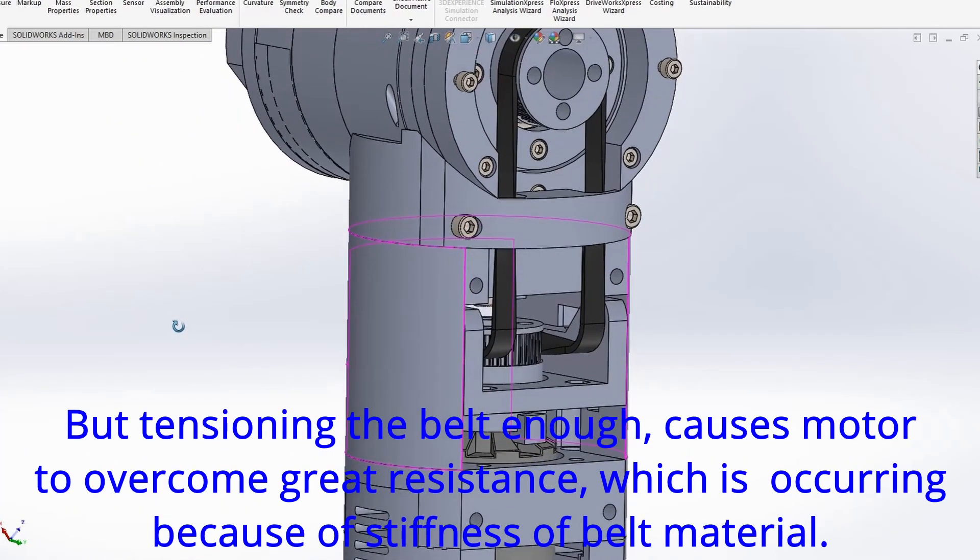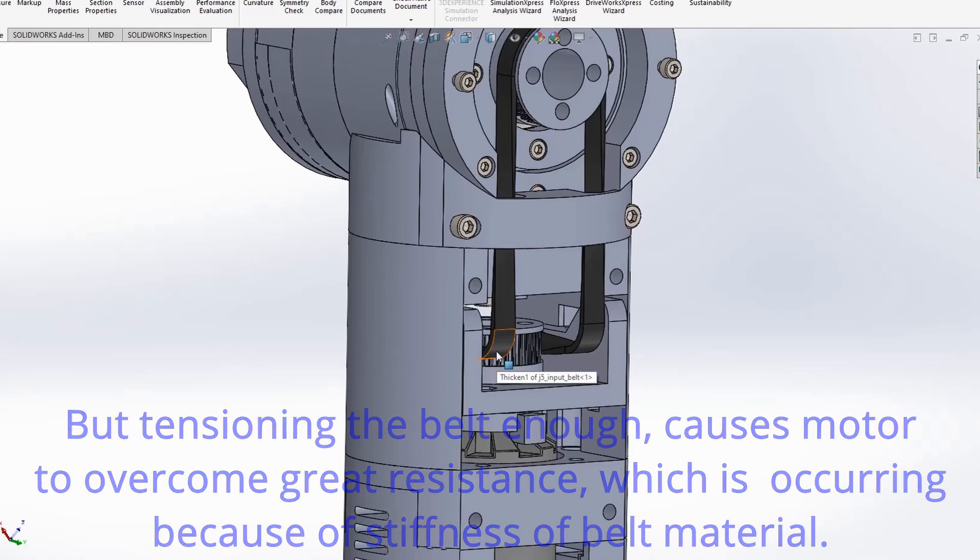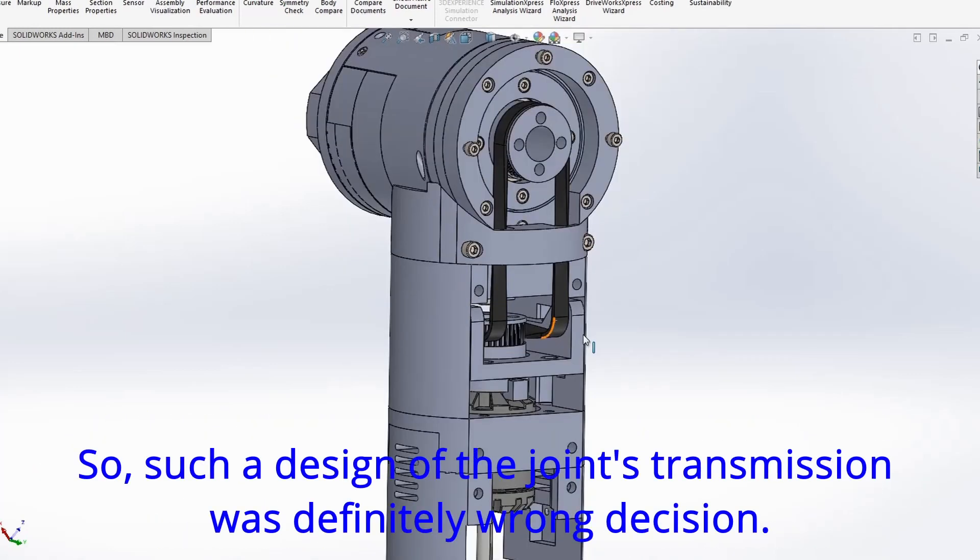But tensioning the belt enough causes motor to overcome great resistance which is occurring because of stiffness of belt material. So such a design of the joints transmission was definitely wrong decision.